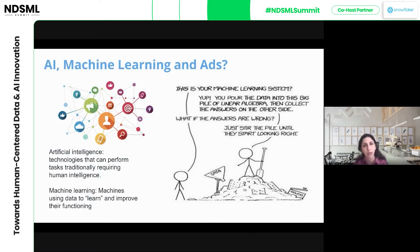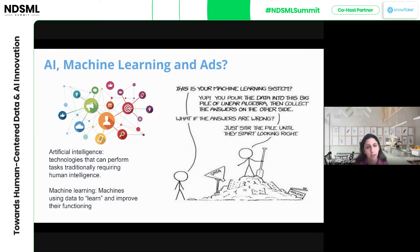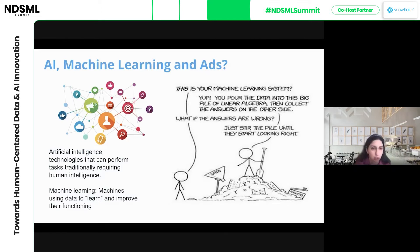We hear the terms AI and machine learning a lot, but what do we mean by artificial intelligence, and is it the same thing as machine learning? Artificial intelligence is a broader term that encompasses all technologies that can perform tasks that traditionally required human intelligence — from self-driving cars, to prediction, to building smarter machines, to robots, and so on.